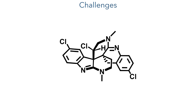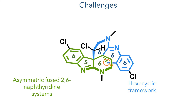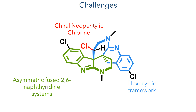This molecule presents some unique challenges. It consists of a hexacyclic framework comprising two fused 2,6-naphthyridine ring systems. These two systems are almost identical; however, one consists of a 6-5-6 fused ring system while the other has three six-membered rings. This asymmetry, introduced by the extra carbon at C22, rules out many dimerisation strategies and necessitates a more linear synthetic route. Embedded within this system is also a chiral neopentyl centre requiring stereoselective introduction of a chlorine atom.